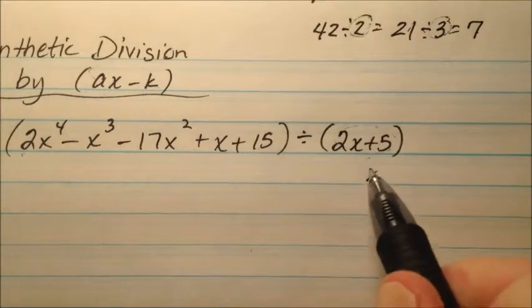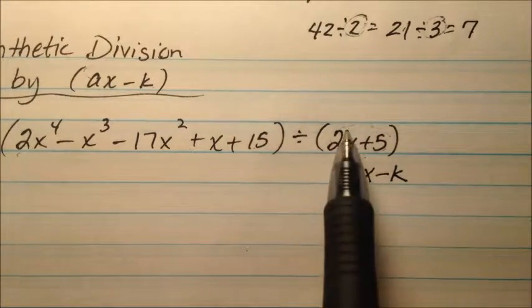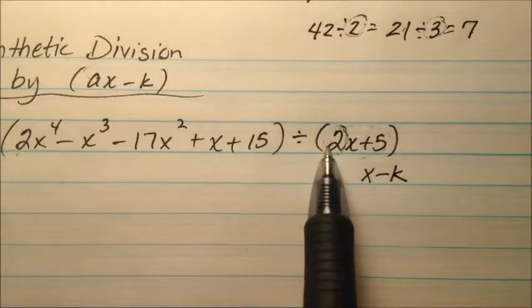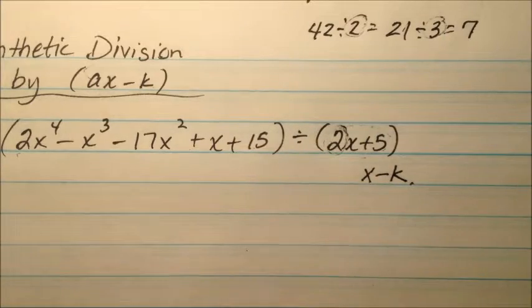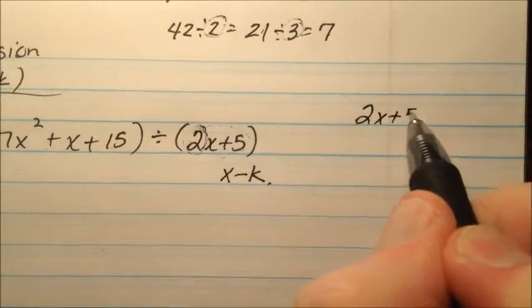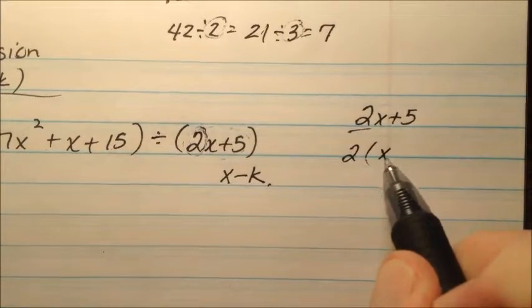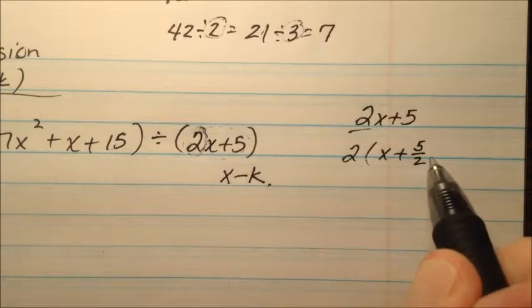This is not in the form x minus k, but if I factored out this 2, I could make it in the form x minus k. So if I have 2x plus 5 and I factor this 2 out, 2 will be on the outside, then I'll have x plus 5 halves.